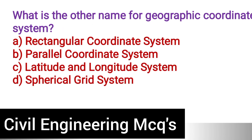Next question: What is the other name of a geographic coordinate system? Option A: Rectangular coordinate system. Option B: Parallel coordinate system. Option C: Latitude and longitude system. Option D: Spherical grid system. The correct answer is option D, spherical grid system.